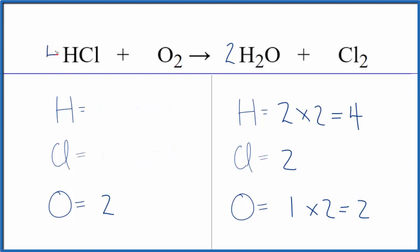So we'll put a four in front of the HCl. One times four, we have four hydrogens. One times four, we have four chlorines. That's good, though. We could put a two here. Two times two, that'll give us four chlorines. We're done. This equation is balanced.